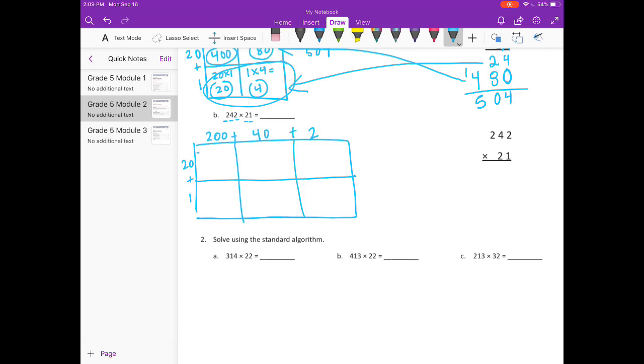So in here I have 20 times 200 which is 4,000. And here I have 20 times 40 which is 800. And then 20 times 2 is not 80. It is 40.